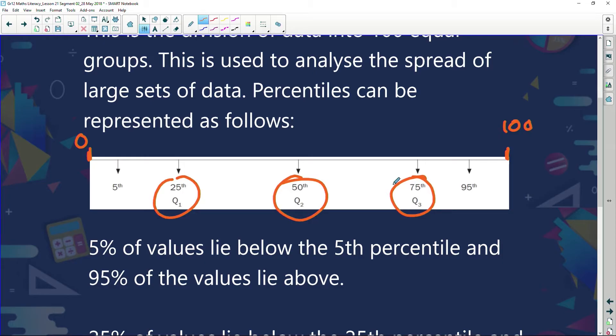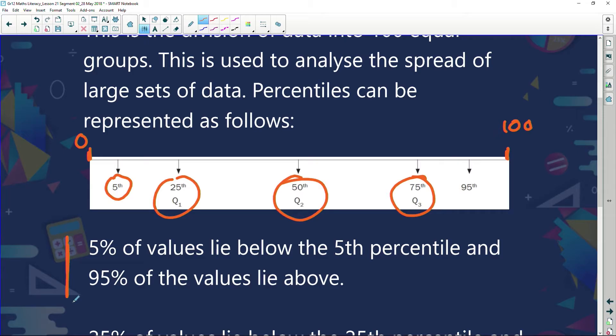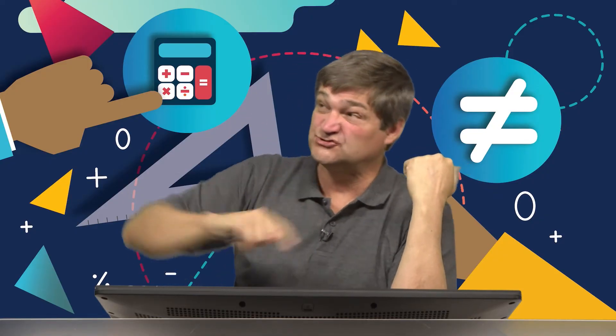Now I want us to look at this thing here: the fifth percentile. What does the fifth percentile mean? It means that 5% of values lie below the fifth percentile and 95% of the values lie above the fifth percentile. So if your teacher says you were on the fifth percentile, don't get excited - it doesn't mean you came fifth. It means only 5% of the country did worse than you; 95% of the country did better than you. That's nothing to celebrate.